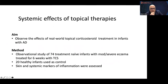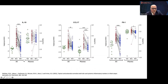One study on the systemic effects of treating skin topically: in our department we looked at real-world topical corticosteroid treatment in 74 infants with AD who hadn't been treated before, treated for six weeks, compared to healthy controls. We looked at systemic markers of inflammation — a type 2 cytokine CCL17 and markers related to angiogenesis. We see massive normalisation of plasma cytokines from skin treatment. If you treat the skin with topical corticosteroids, systemic biomarkers improve — we postulate because most of those systemic biomarkers are actually generated in the skin.